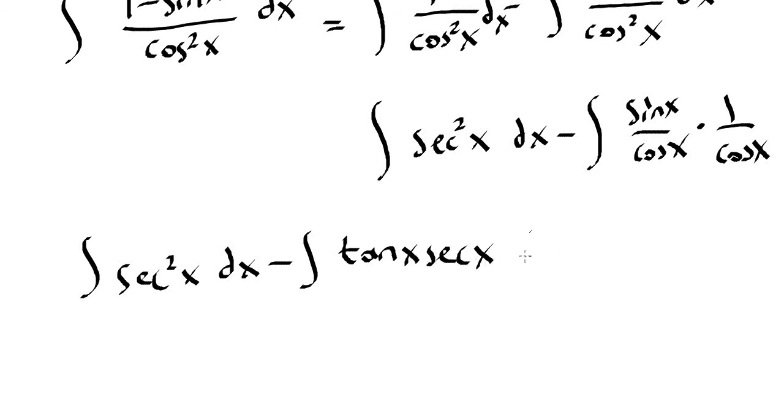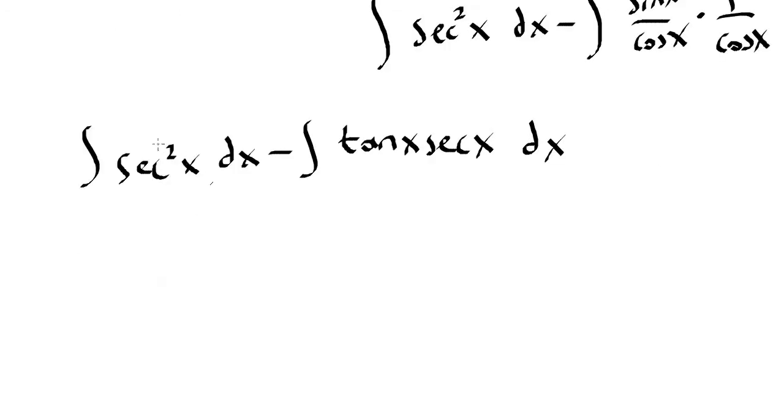Using the reciprocal identities, now we know how to integrate those. Integral of secant squared of x is tangent x and integral of tangent x secant x is secant x, so this is the answer.